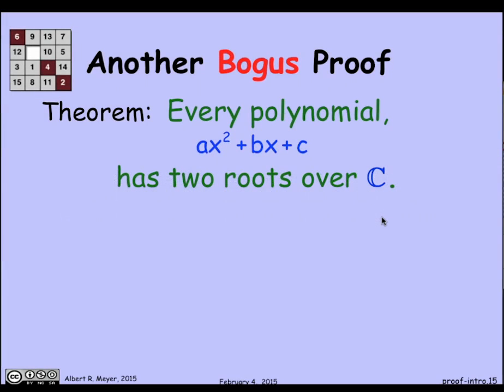There's other kinds of bogus proofs that come up. Let's just run through this one quickly. Here's a fact that you know about roots of polynomials. Every polynomial has two roots, at least over the complex numbers, over C.